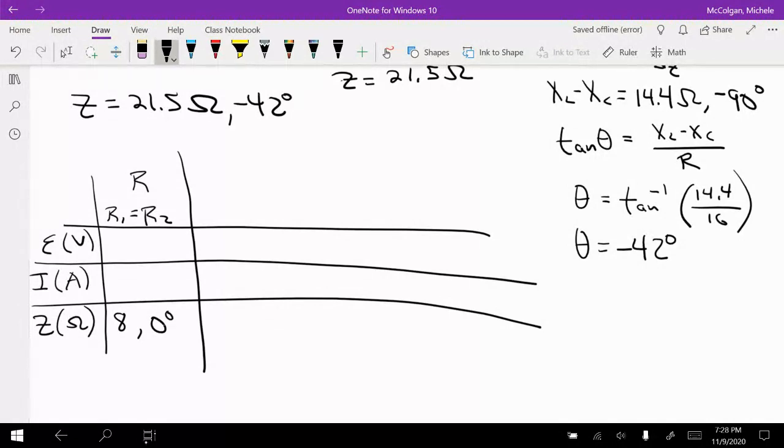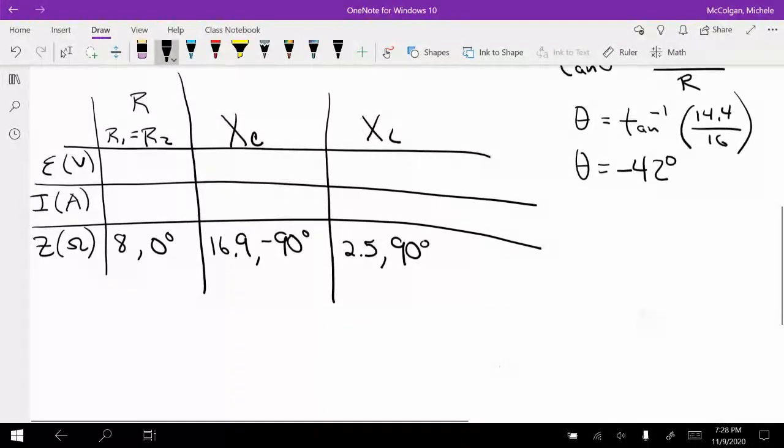For my XC, this is C, I'm going to have 16.9 and negative 90 degrees. For XL, I'm going to have 2.5 and positive 90 degrees. I need to calculate my current.